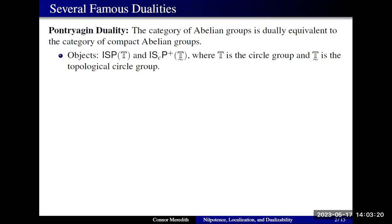The other thing I want to emphasize about this duality is that the functors also take a particular form. Given an abelian group, we map it to its space of characters over the circle group. Given a compact abelian group, we map it to its algebra of characters over the topological circle group.